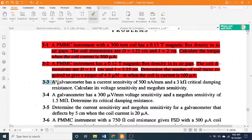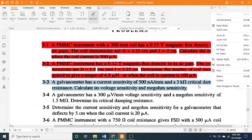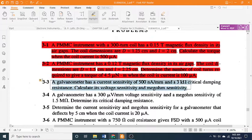3-3: A galvanometer has a current sensitivity of 500 μA/mm and a 3 kΩ critical damping resistance. Calculate its voltage sensitivity and megaohm sensitivity.